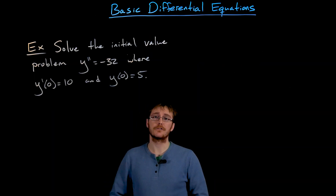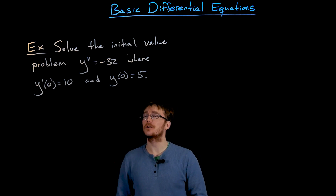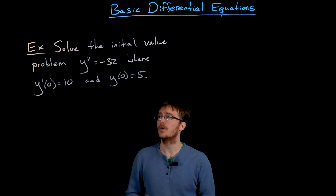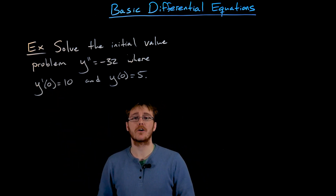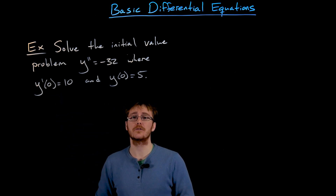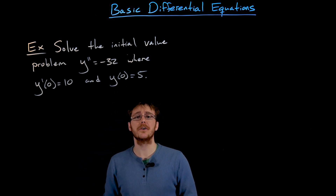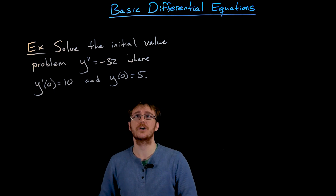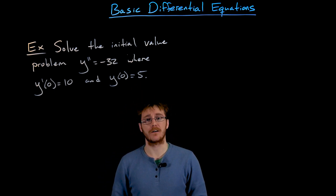In this example we're going to solve a differential equation together. We're asked to solve the initial value problem y double prime equals negative 32, with the initial conditions that the first derivative evaluated at zero equals ten, and the original unknown function evaluated at x equals zero gives an output of positive five.